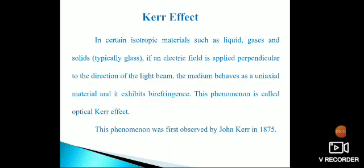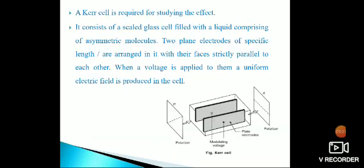This phenomenon was first observed by John Kerr in 1875. This is the Kerr setup. The Kerr cell is shown here. A Kerr cell consists of a sealed glass cell filled with a liquid comprising asymmetric molecules. Two plane electrodes of a specific length are arranged in it with their faces strictly parallel to each other. When a voltage is applied to them, a uniform electric field is produced in that particular cell.